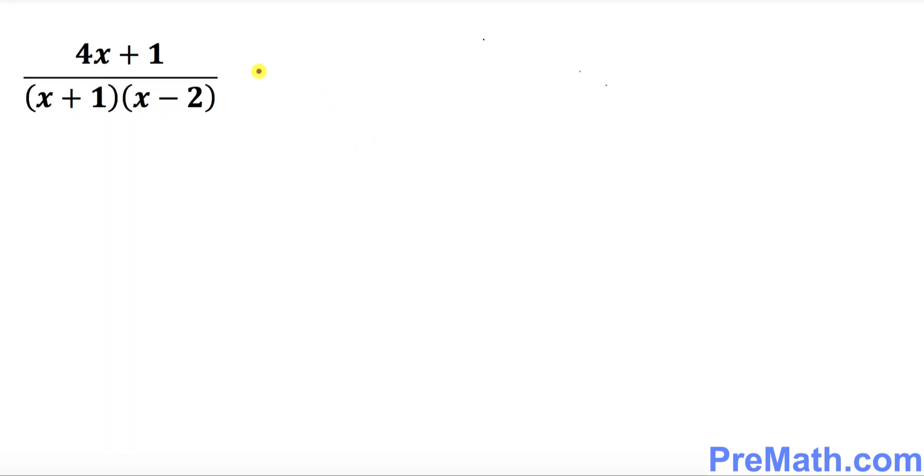So let's get started with the partial fraction. This rational expression can be written as A over the first linear factor, which is x plus 1, plus B divided by the second linear factor, which is x minus 2.